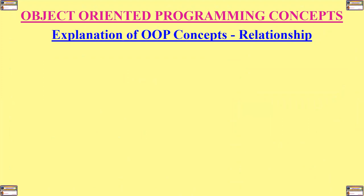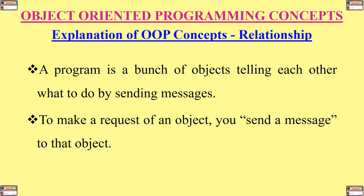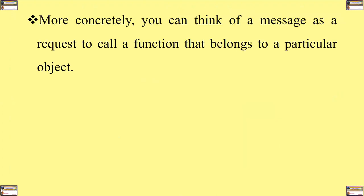So what is a relationship? A program is a bunch of objects telling each other what to do by sending messages. To make a request of an object, you send a message to that object. More concretely, you can think of a message as a request to call a function that belongs to a particular object.